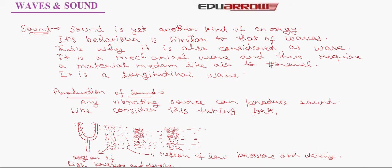Now let us understand how sound is produced. Any vibrating source can produce sound. Now let us consider the example of tuning fork. When tuning fork vibrates, it displaces the air in front of it and creates a region of high pressure and density. When it comes back, it creates a region of low pressure and density. In this way, this process continues until the sound reaches our ears. And in this way, sound is produced. These regions of high pressure and density are called compressions.